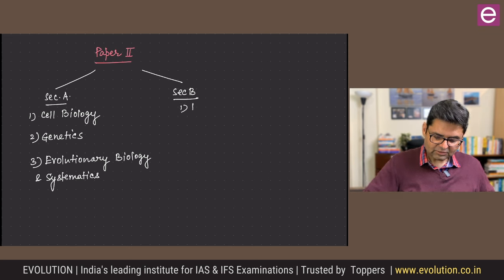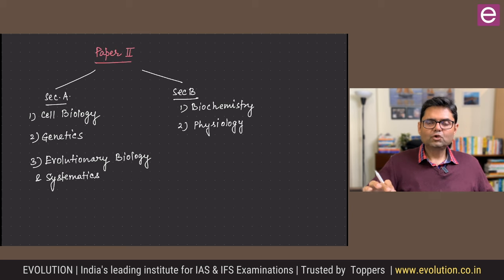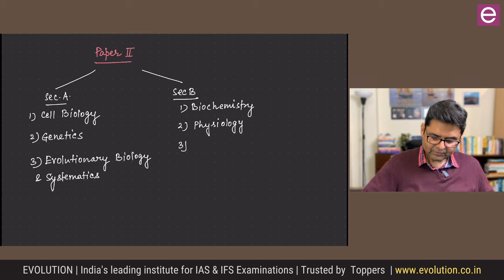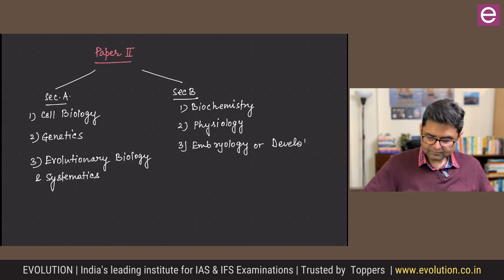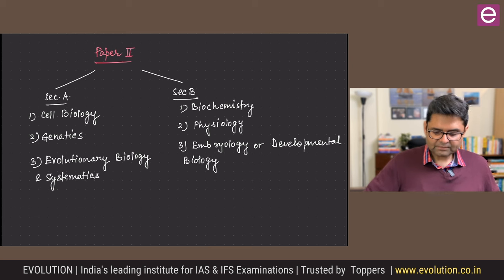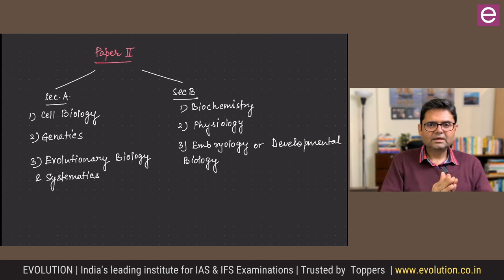Section B starts with biochemistry — a very important but small part, so it will not take much time. The next part is physiology, specifically human physiology — all questions are human physiology-based. The third part is embryology or developmental biology. These are the topics in Paper 2.